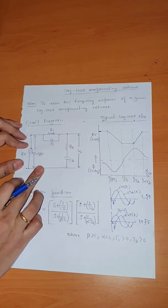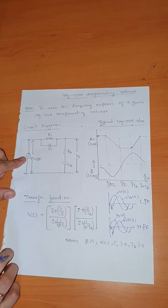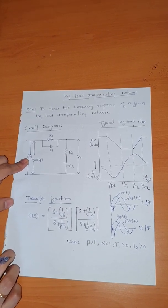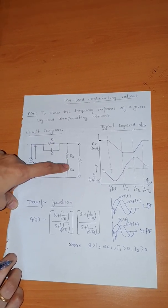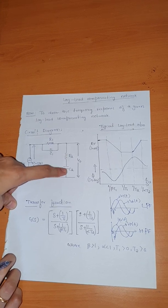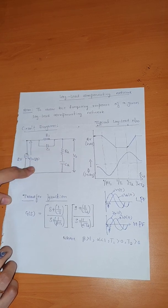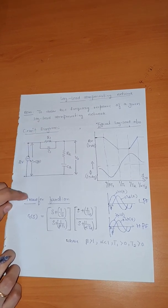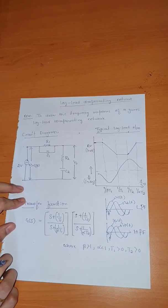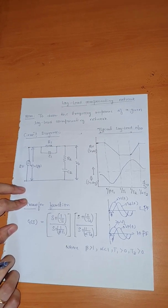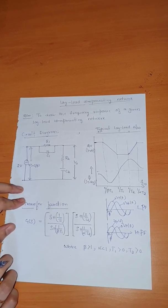This is the circuit diagram for the lag-lead compensating network. The input supply from the signal generator is fed to the lead compensating network, and on the output side we connect the lag network — R2 in series with capacitor C2. By using this lag and lead compensating network, we can increase both the transient response and the steady state response of the system.